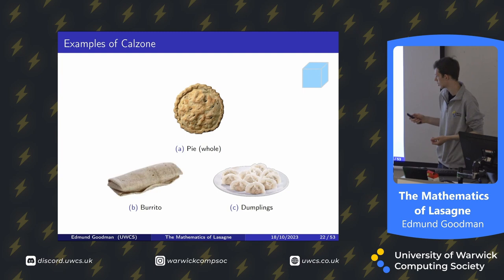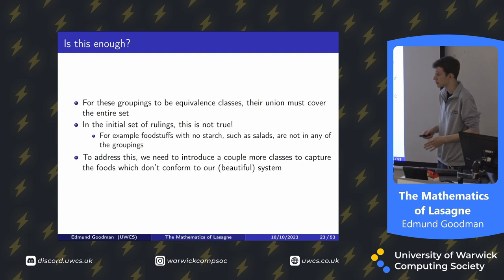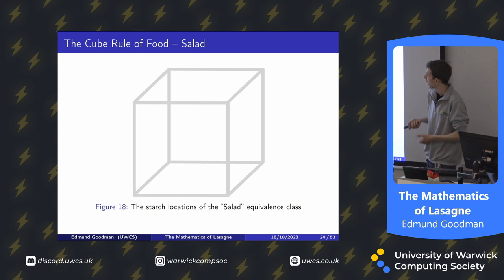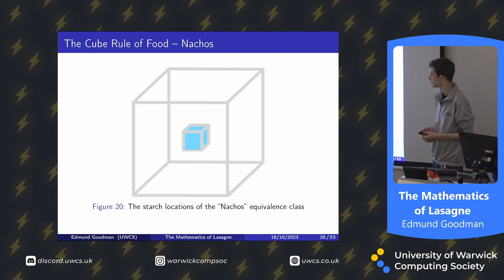Is this enough? For these groupings to be equivalence classes, their union must cover the entire set — and we can see this isn't true. A foodstuff with no starch, like a salad, isn't in any of the groupings. So we need a couple more equivalence classes. Salad has no starch anywhere — nothing in the cube — and examples of salad are steak, chocolate, and soup, which is just a wet salad. And nachos is a catch-all: if starch is distributed anywhere through it, then it's a nacho. Examples include a salad with croutons and poutine, where the cheese curd is the non-starch and the chips are the starch.